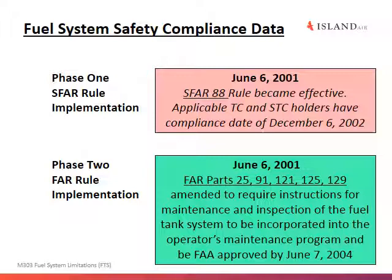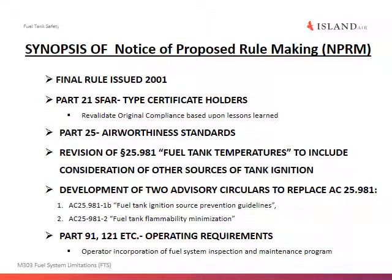In Phase Two, the FAR rule implementation, other parts of the regulations — Parts 25, 91, 121, 125, and 129 — were amended or revised to include better maintenance and inspection requirements of the fuel tank system. Operators then had three years to incorporate the changes into their maintenance programs. So we have Phase One and Phase Two, and now we'll look at a synopsis of the different things that happened.